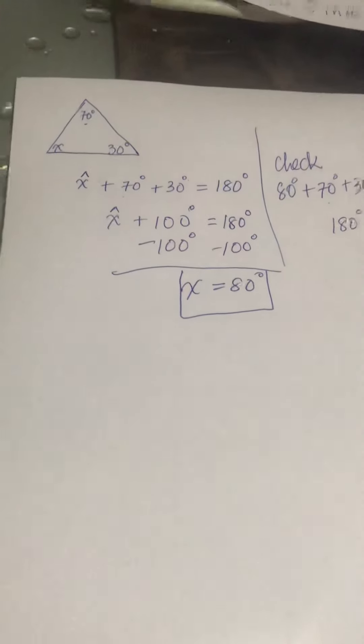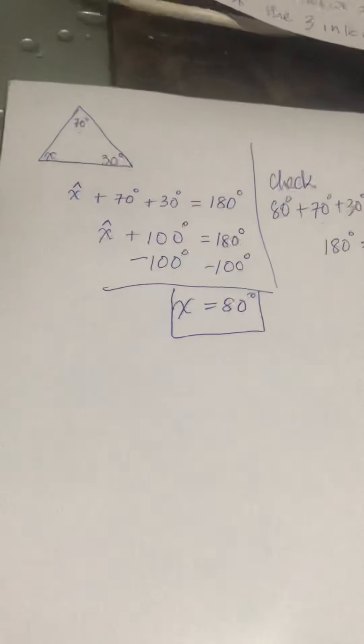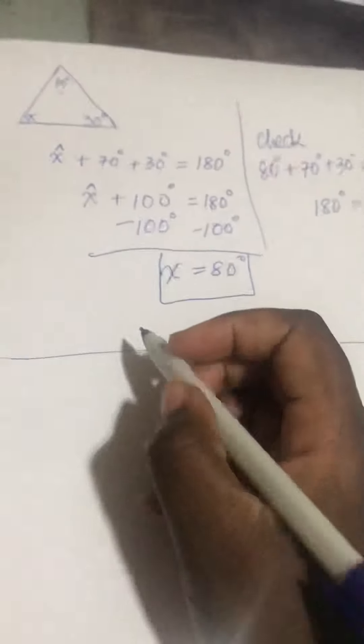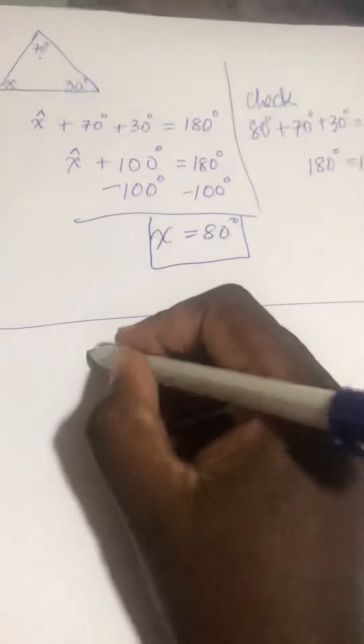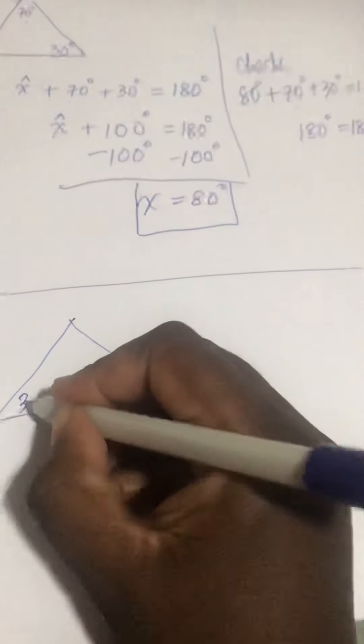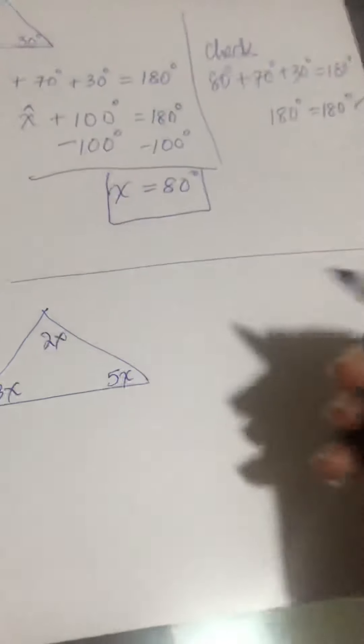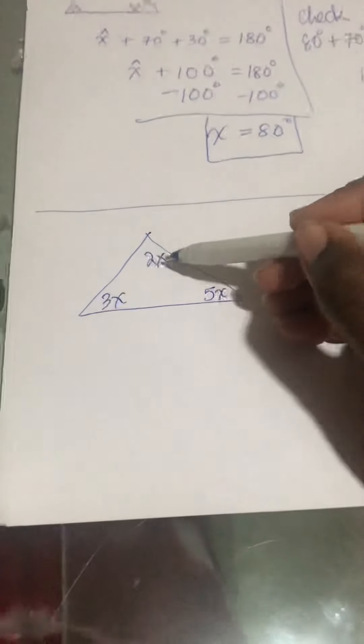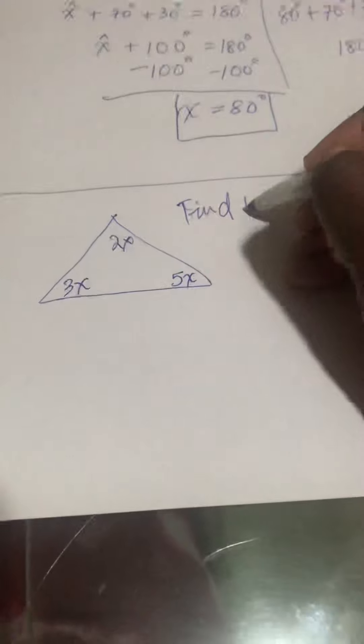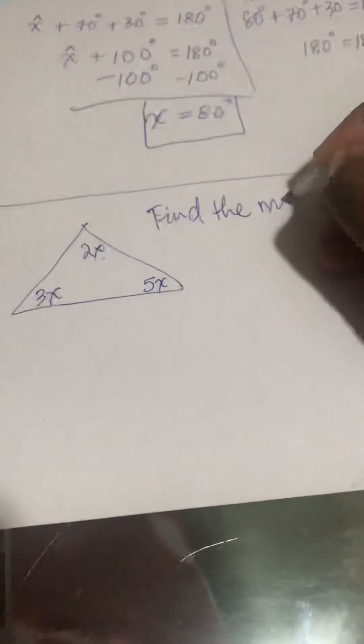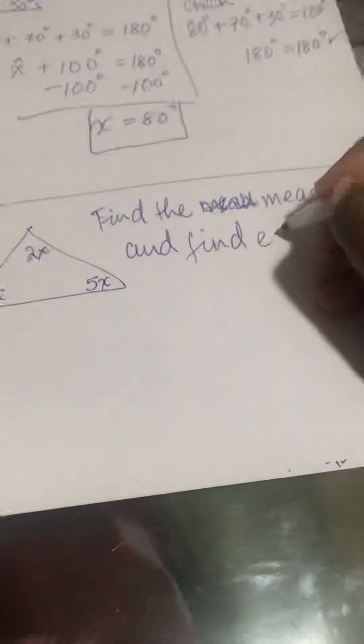Okay, then we need to do—so if a question tells you this is 3x, this is 2x, and this is 5x, okay, find the measure of x. Find the value or measure of x, and find each interior angle measure.